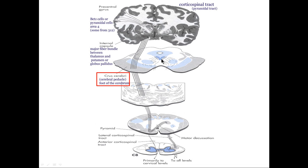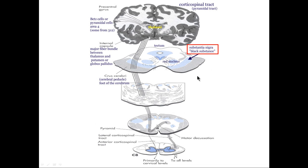In the center of the cerebral peduncle is where the corticospinal tract sits. Right above or internal to the crus cerebri is the substantia nigra — Latin for 'black substance.' Here you find dopamine-containing cells that also contain neuromelanin, so they appear black on a gross specimen. If these cells get destroyed, you end up with Parkinson's disease.